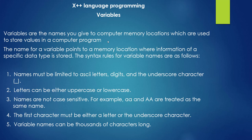In this lesson, let's discuss variables in X++ programming language. Variables are the names you give to a computer memory location, which are used to store values in a computer program. The name for a variable points to a memory location where information of a specific data type is stored — such as a string, integer, boolean, or any other kind of data type. Based on the data type, the value is stored in that memory location.